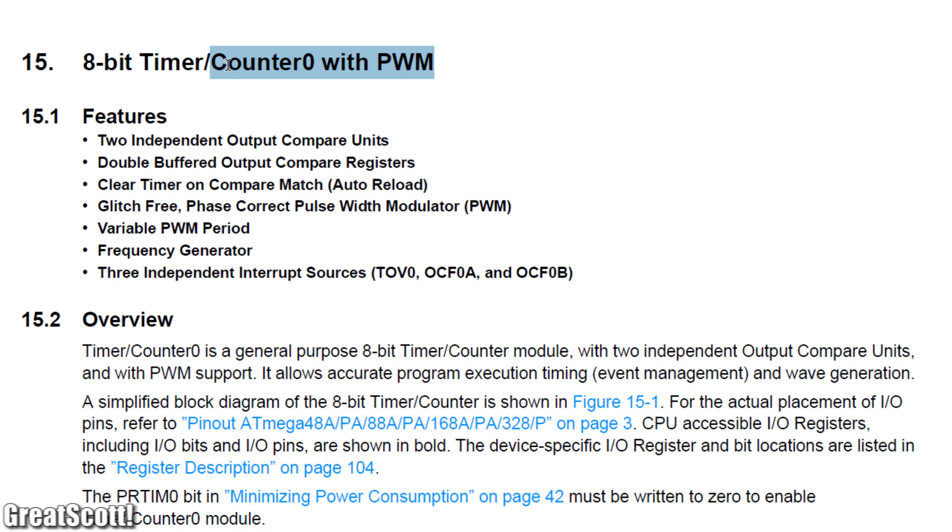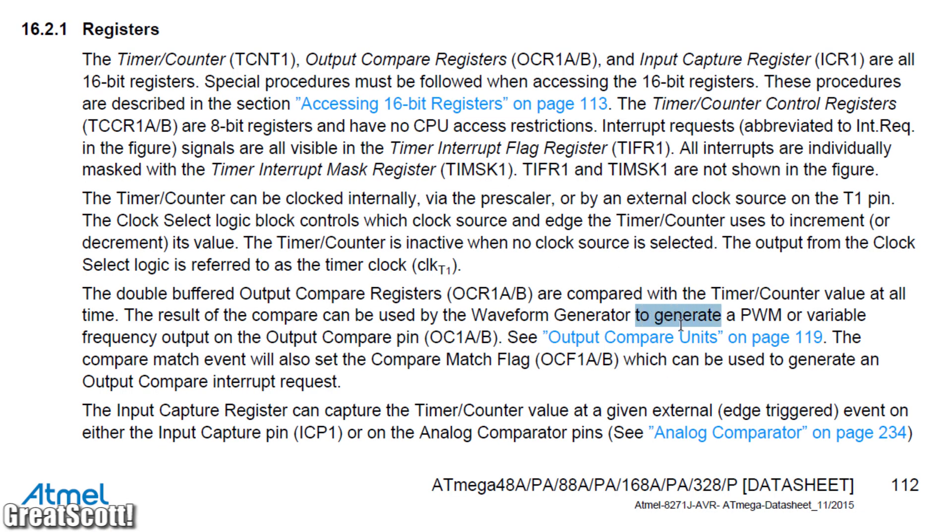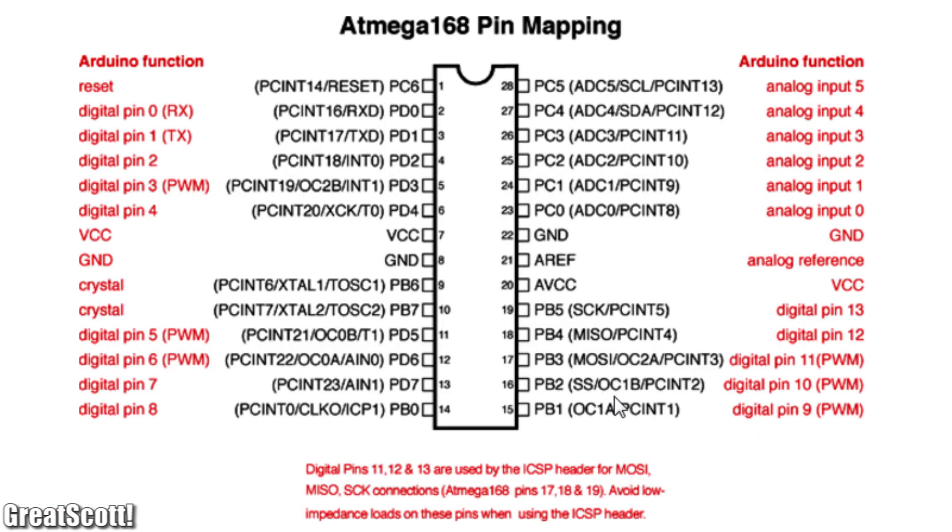The solution is to have a closer look at the three timers/counters of the ATmega328p. Because counter 1 creates a PWM signal on the output pin OC1A/B, which according to the Arduino pin mapping is pin 9 and 10.